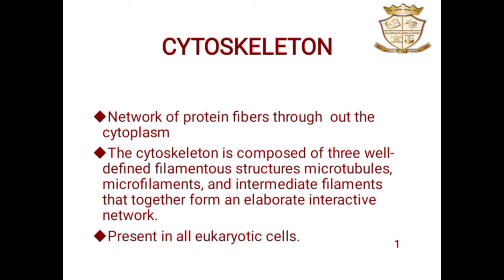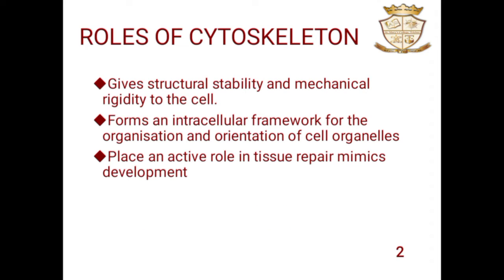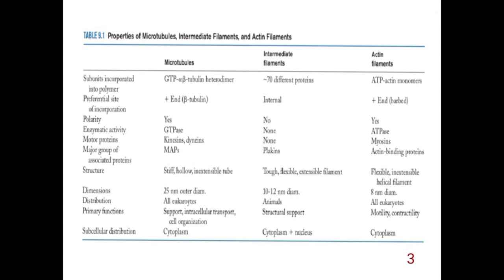It is present in all eukaryotic cells. It gives structural stability and mechanical rigidity to the cell and forms an intracellular framework for the organization and orientation of cell organelles. The cytoskeleton plays an active role in tissue repair, mimics development, and helps in the interactions within and between the cytoskeleton elements, maintaining the integrity of the cell. These properties of microtubules, intermediate filaments, and actin filaments — their dimension, structure, distribution, and primary function — are elaborated in the table.